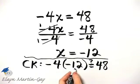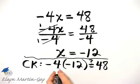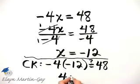Negative 4 times negative 12, a negative times a negative is positive, and 4 times 12 is 48.